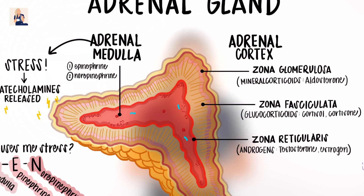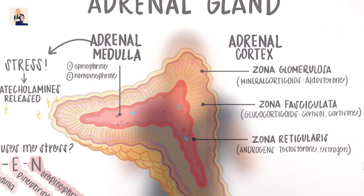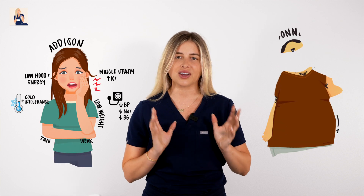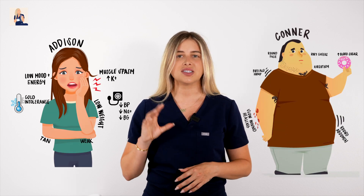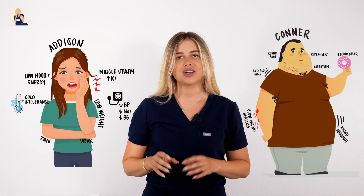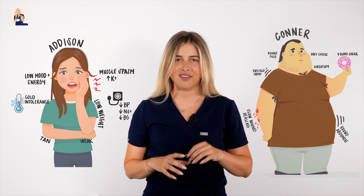We're looking at the first two layers of the adrenal cortex when we talk about Addison's disease and Cushing syndrome, because we're primarily focusing on aldosterone and cortisol — our steroid hormones. To remember these, picture our couple: Addison is our skinny, weak, tan girl, and Cushy Connor is our big, hairy, buff man.